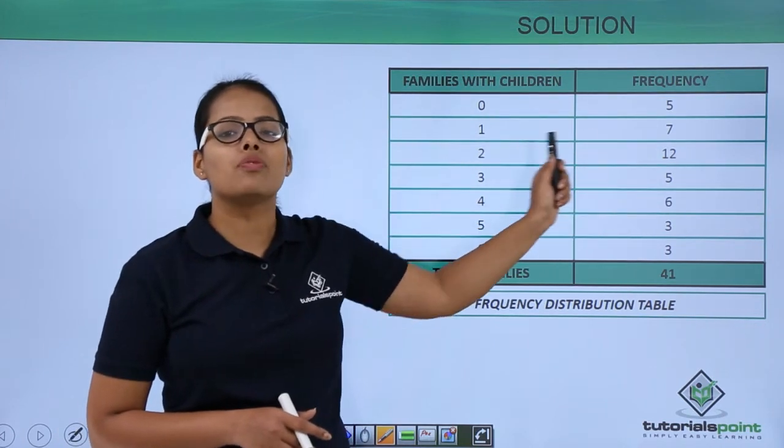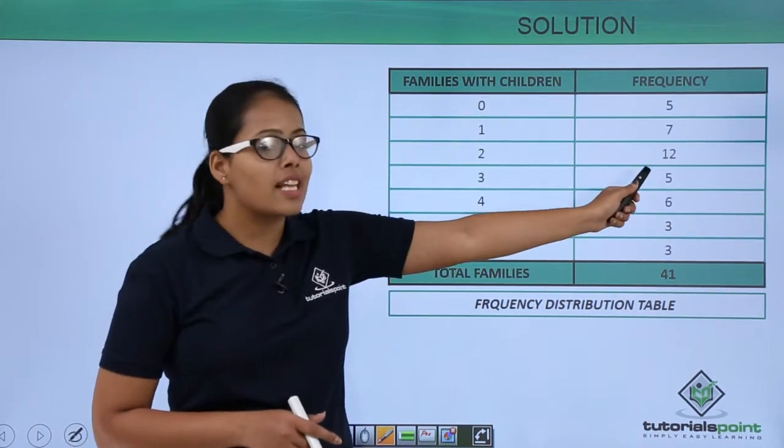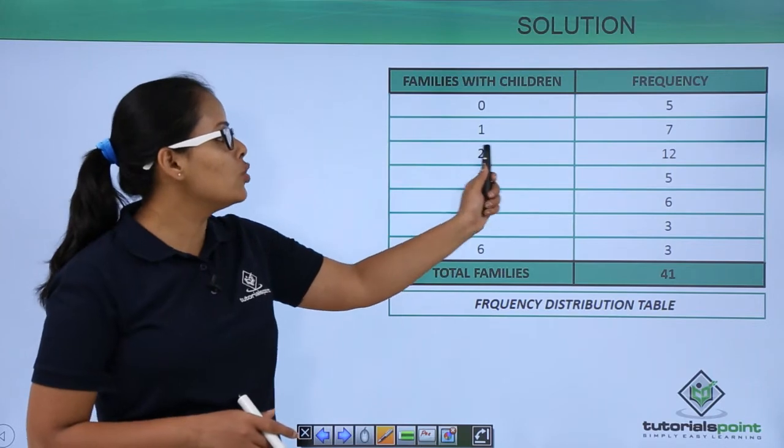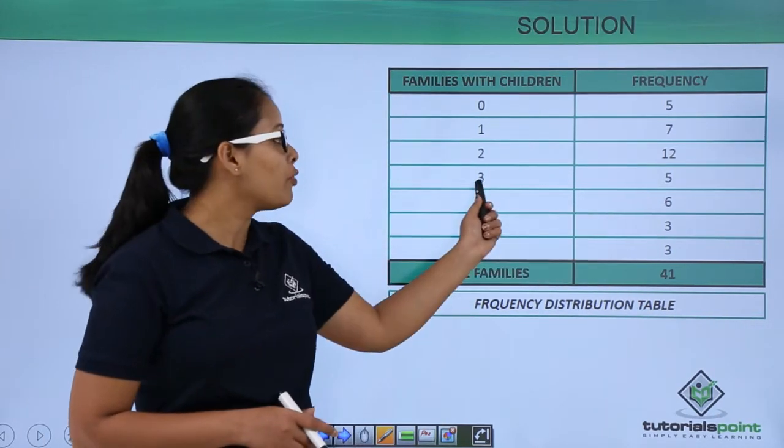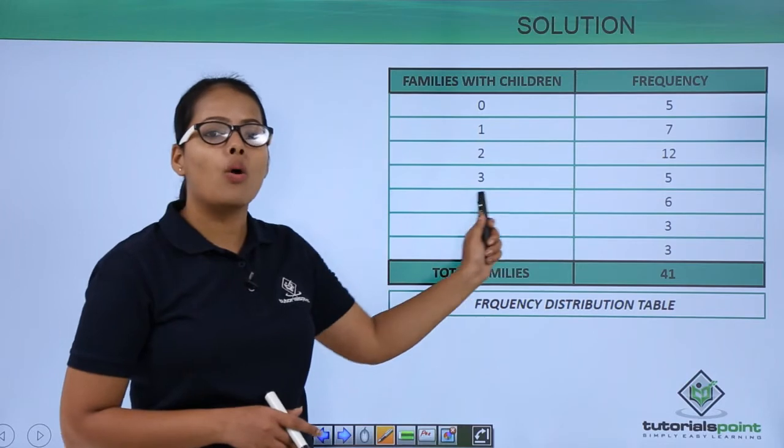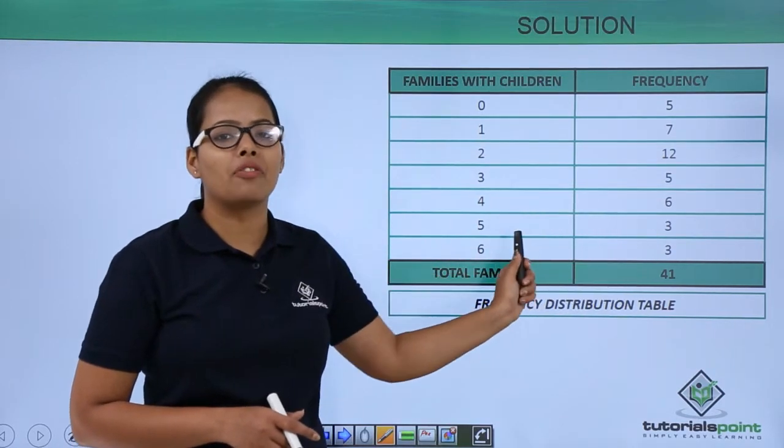There are exactly 12 families with two children, there are exactly five families with three children, and that's how it will go on for all the other families.